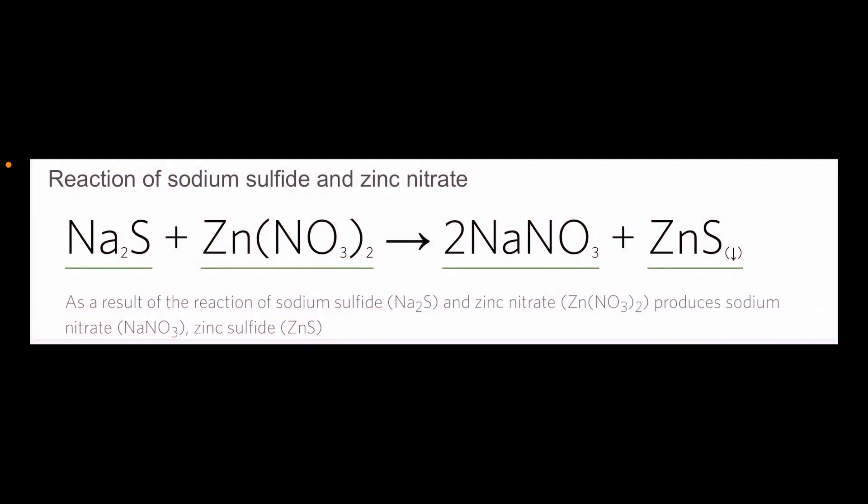Okay, so what's going on in this awesome double displacement precipitation reaction is you start out with the sodium sulfide in an aqueous solution. That's the Na₂S. And you add that to an aqueous solution of zinc nitrate. That's the Zn(NO₃)₂. And when they combine, the metals trade places, and you create sodium nitrate. That's the NaNO₃.